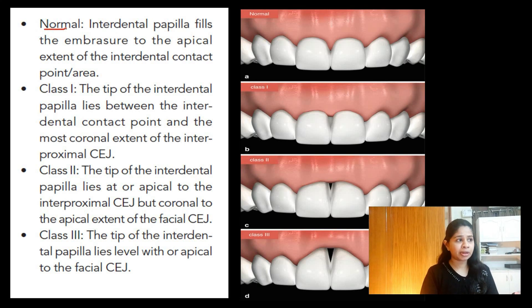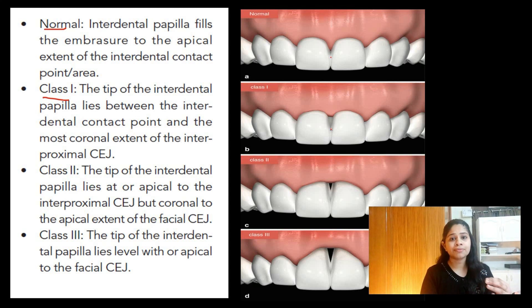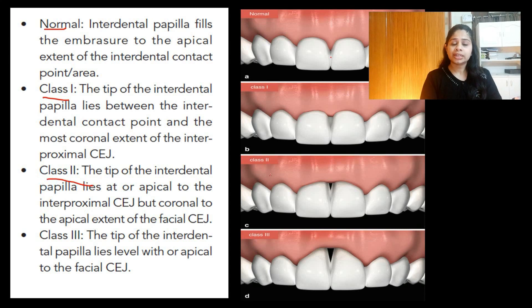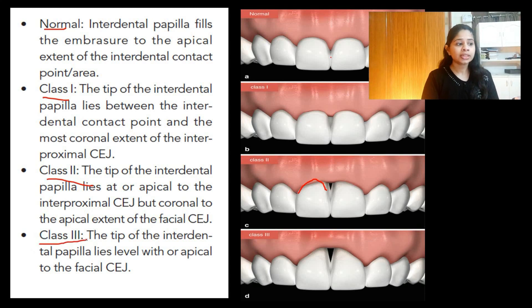Taking the contact point, interproximal CEJ, and facial CEJ as the three reference points, we classify the interdental papilla. The normal category: the papilla fills the entire embrasure and its tip lies just apical to the contact point — a perfectly healthy scenario. In Class 1, the tip is further apical to the contact point but still coronal to the interproximal CEJ. In Class 2, the tip recedes further and there is exposure of the interproximal CEJ — the papilla lies apical to the interproximal CEJ but coronal to the facial CEJ.